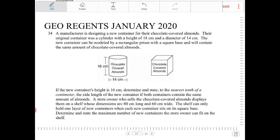The new container can be modeled by a rectangular prism with a square base and will contain the same amount of chocolate-covered almonds.